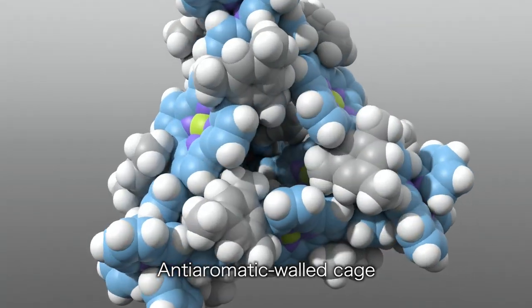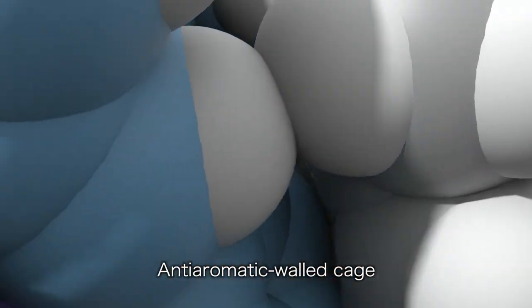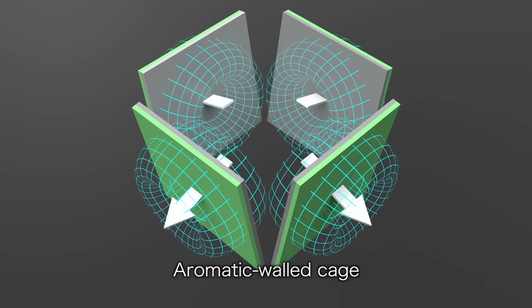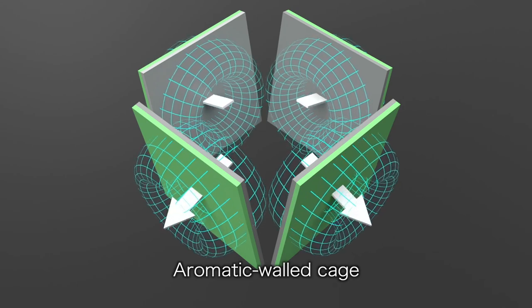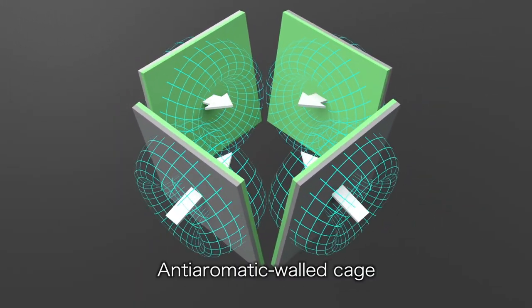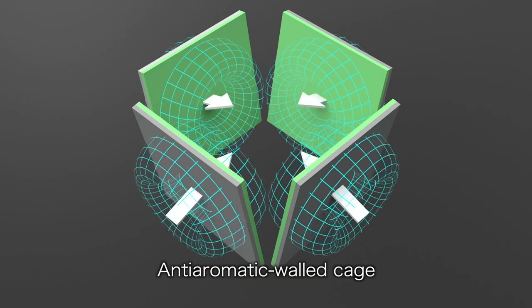The researchers were interested in the magnetically unique environment inside the nanocage. Compared to having aromatic walls, anti-aromatic walls had been predicted to enhance the opposite magnetic field inside the nanospace. But this had never been experimentally shown until now.